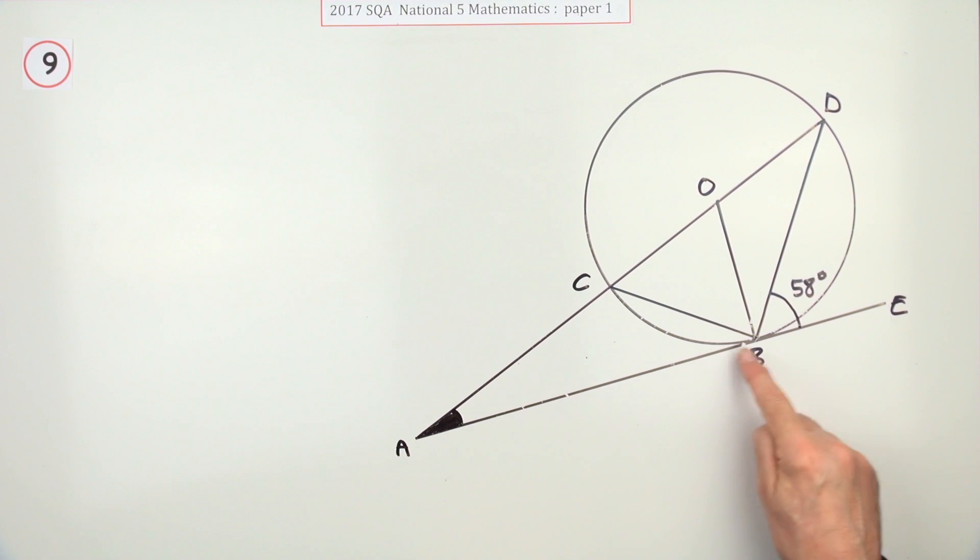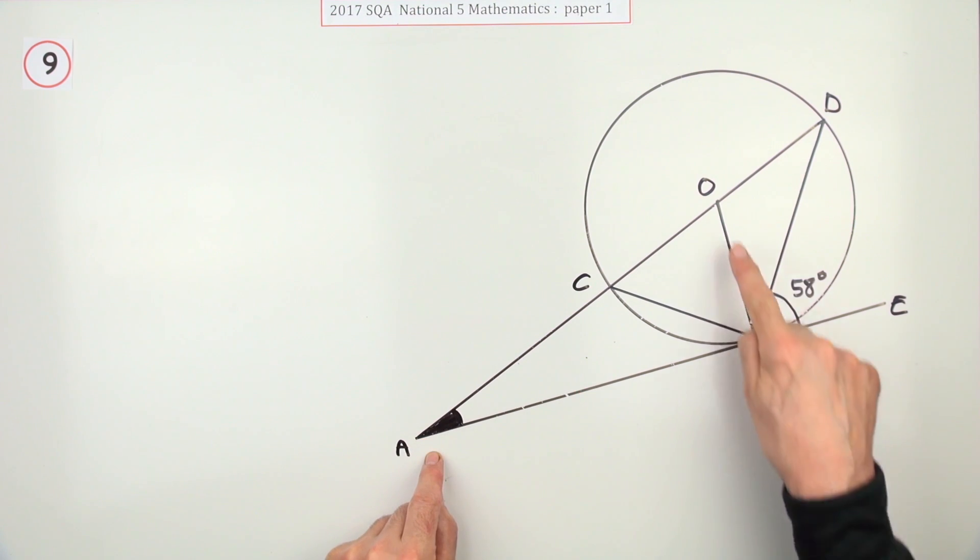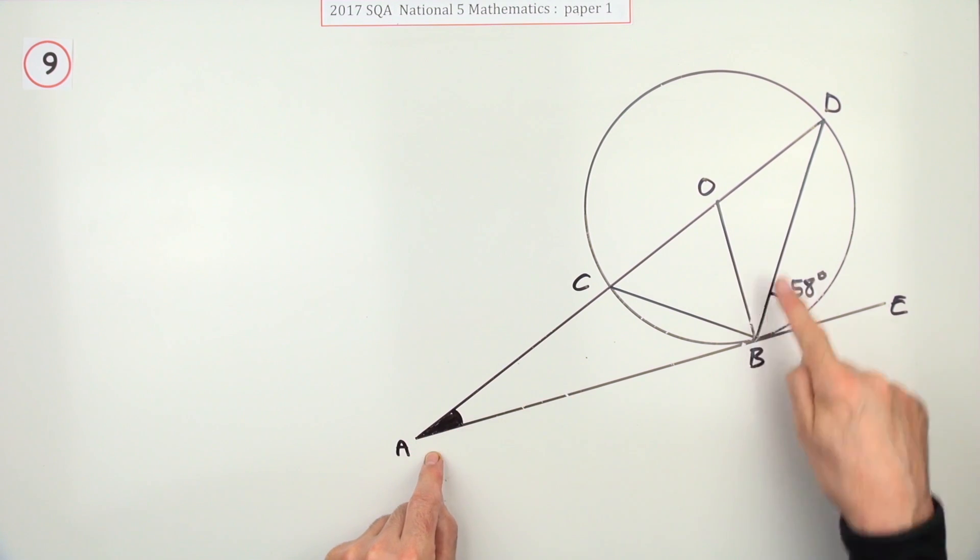Best thing here is just to fill the information into the diagram. Now, there are three triangles that include this angle. There's triangle ABC. You could work with that one. There's triangle ABO. You could work with that one. That's better because that's a right angle triangle. Or there's triangle ABD.